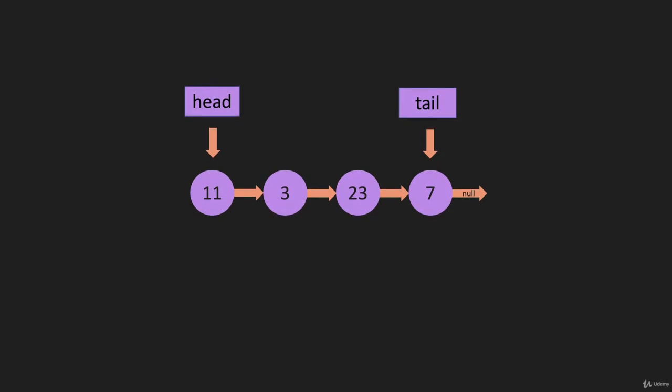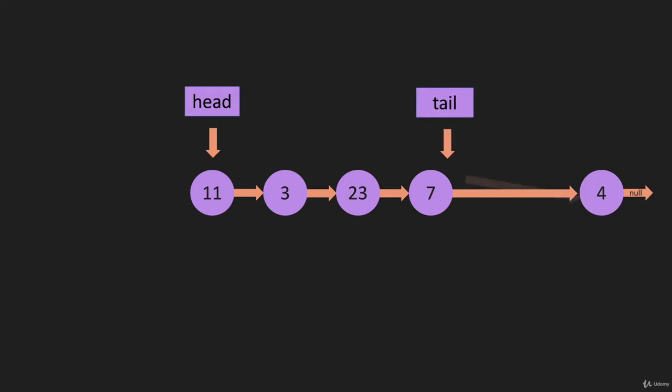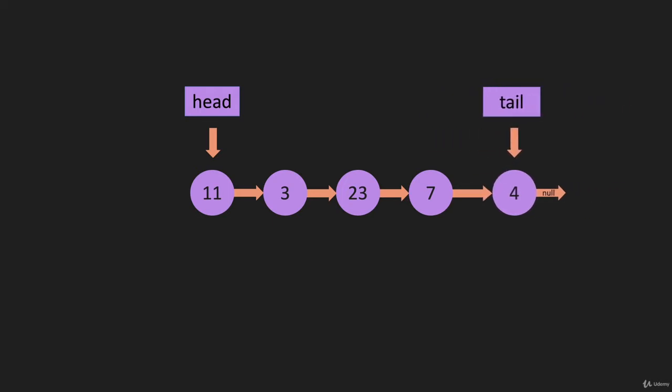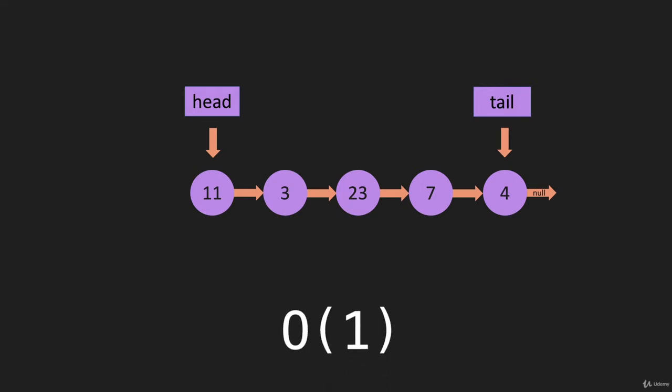I'm going to bring up a linked list and bring a node in from the right. If we're going to add that to the end, we could just have that last item point to that node. Now we can set tail equal to that pointer and it's added into the linked list. It doesn't matter if the linked list had four items or 100 items — the number of steps would be the same. This means it's constant time to push something onto the end, which is O(1).